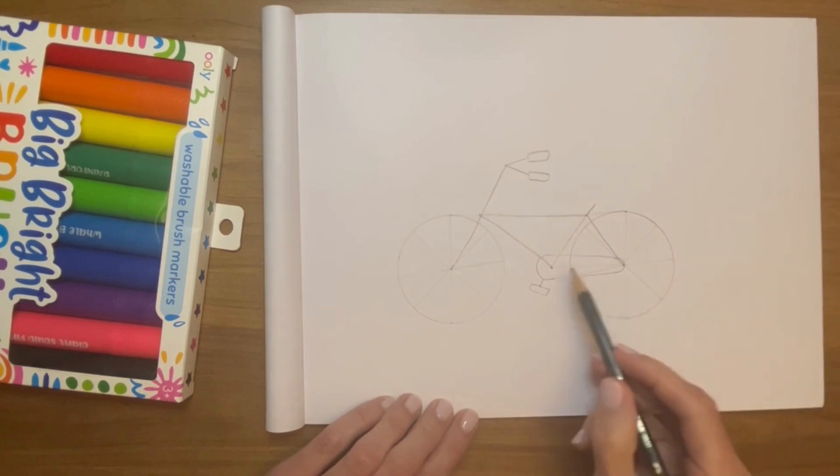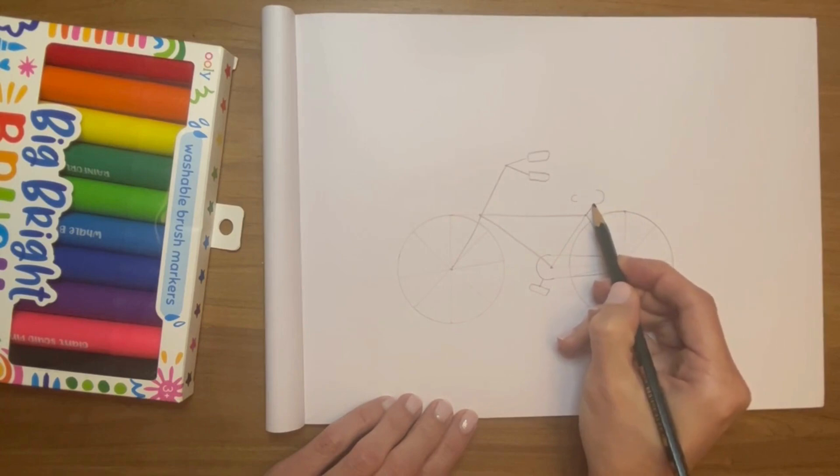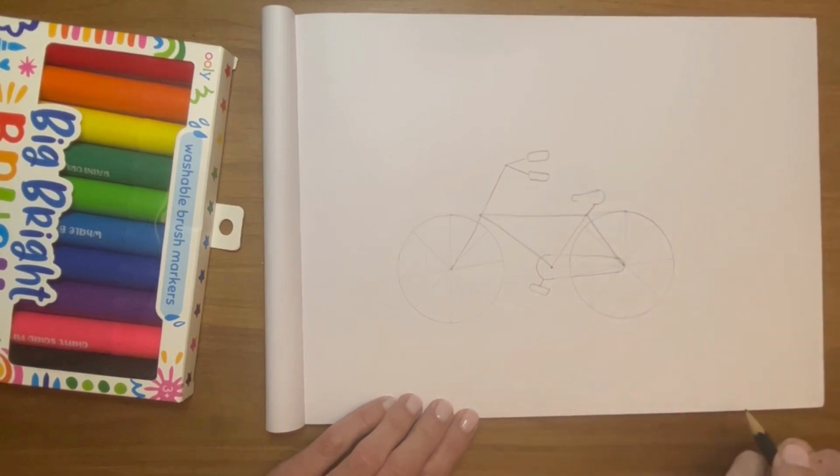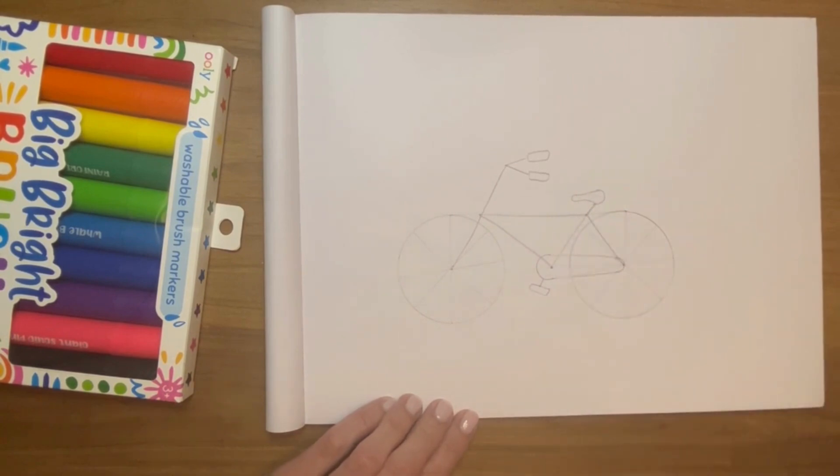And now we're going to do similar to here. We're going to do the C's, except this time the little one's going to be in front and the big one is going to be in the back. And now we're going to join the tops and the bottom. We're going to get a little curved line—that's the seat there. There you go.